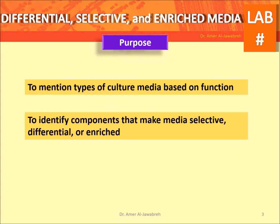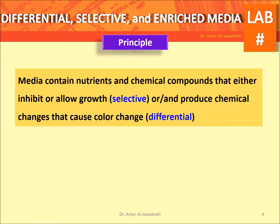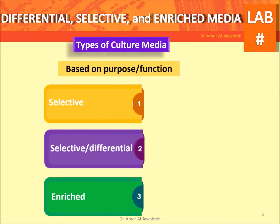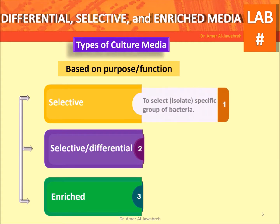To identify components that make media selective, differential, or enriched. Principle: media contain nutrients and chemical compounds that either inhibit or allow growth — selective — and produce chemical changes that cause color change — differential.